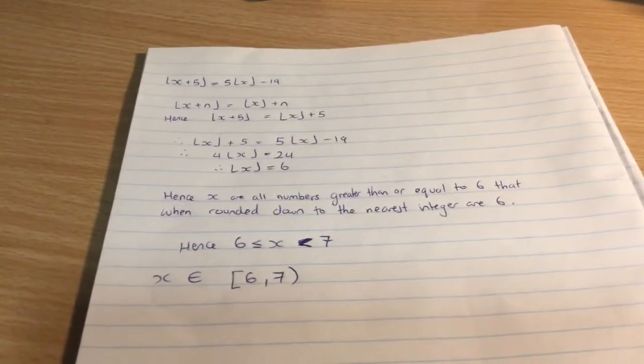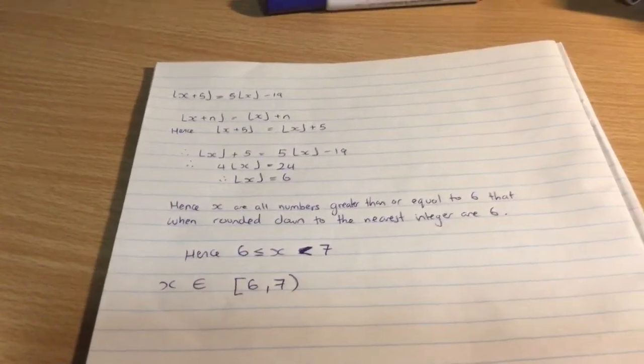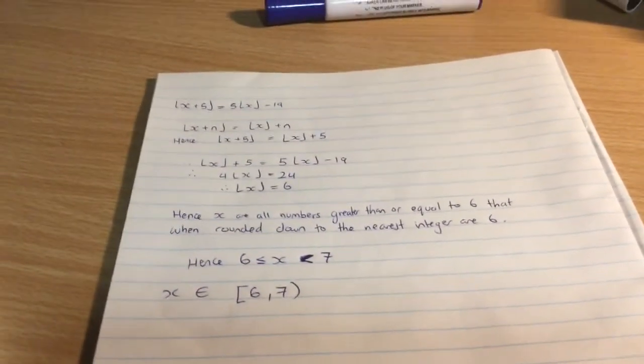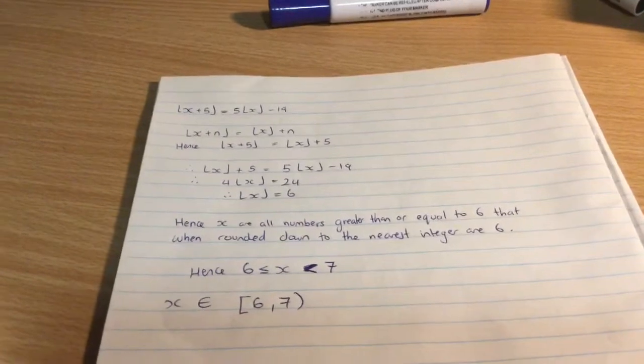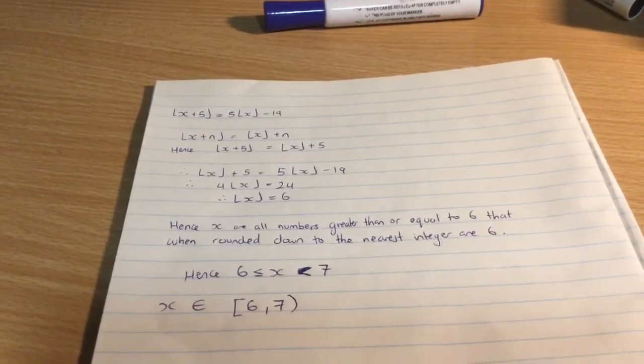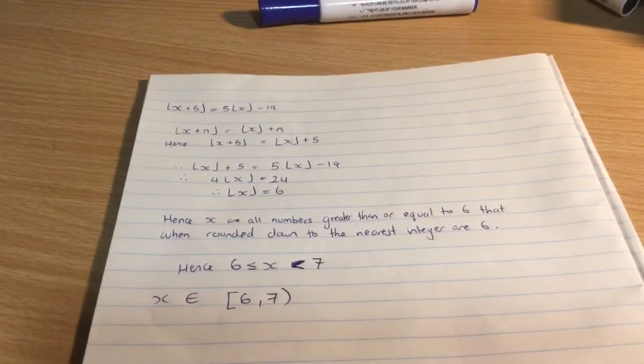So what we're really saying is that hence x are all numbers greater than or equal to 6. So of course we can have x equals 6, but we can have x equals 6.1 for example. We can even have x equals 6.9 because we round down to the nearest integer with the greatest integer function.